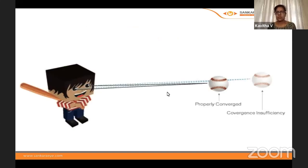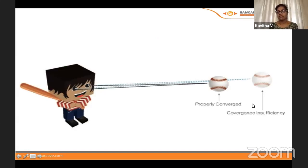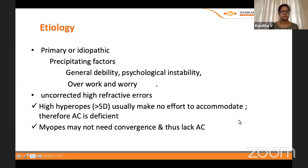If the eyes are converged properly, one can look at a ball normally. With convergence insufficiency, that ability is compromised. What is the etiology? There are many factors — primary or idiopathic is listed first.